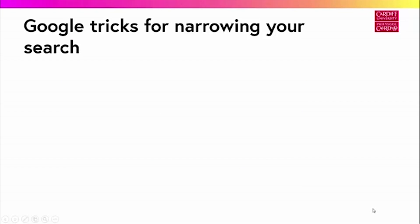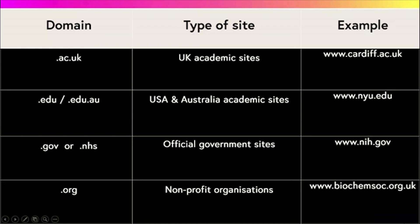Here are some other commands you can use to narrow your results. Use this command to only retrieve results from specific types of site, for example government sites. Here are some examples of other domains which are more likely to offer authoritative information.